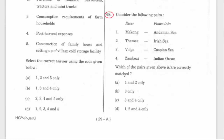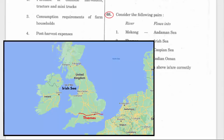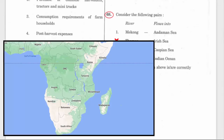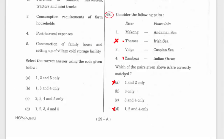Let's go to question 68: consider pairs of rivers and the ocean or sea where they drain. We all know River Thames passes through London, which is in the southern part of the United Kingdom — the Irish Sea is in the north — so Thames does not flow into the Irish Sea. Options A and D are gone. Let's look at Zambezi — this name should remind you of Zimbabwe and Zambia. There is also Mozambique on the right side of Zimbabwe. In fact, the Zambezi River forms the natural border of these countries and flows east, draining into the Indian Ocean — because the Indian Ocean is on the right side of Africa and the Atlantic Ocean is on the left. Between options B and C, Zambezi does flow into the Indian Ocean, so option C is the right answer.